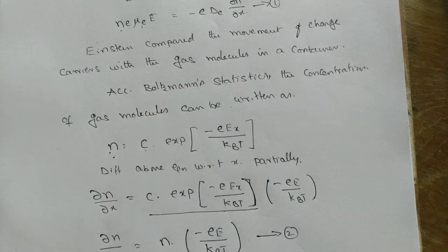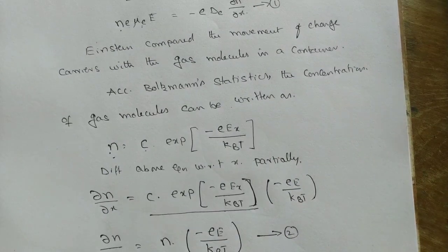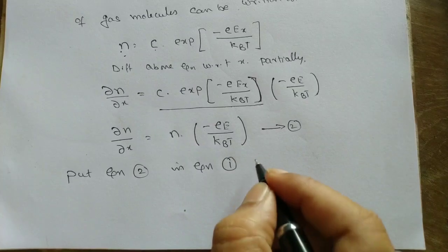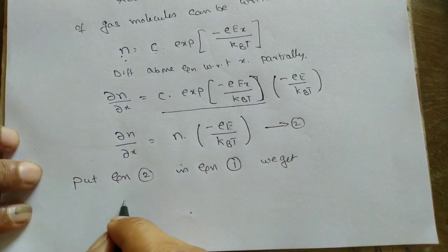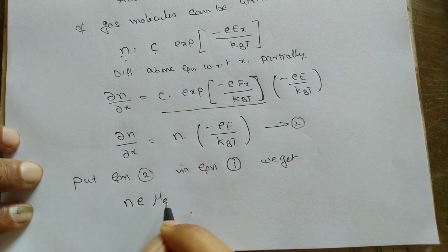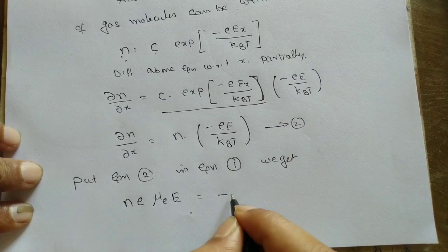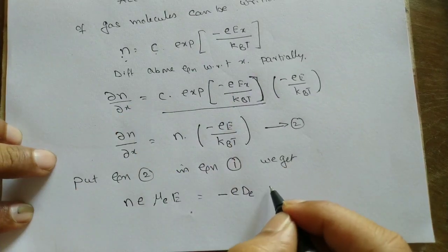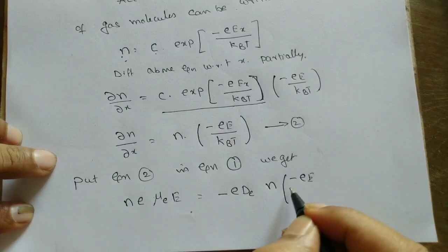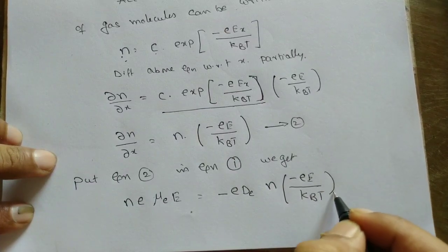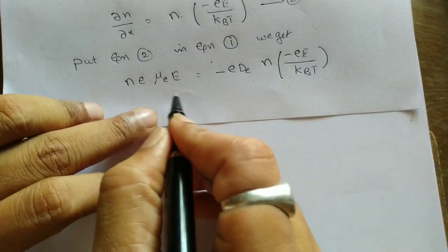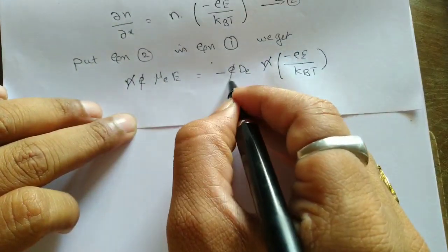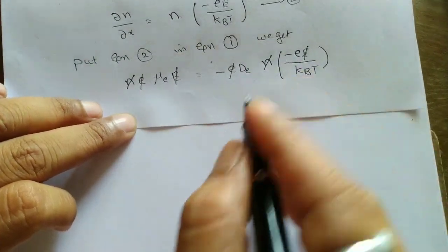Now put equation two into equation one. We get: n·e·mu_e·E = −e·D_e · [n · (−e·E / k_B·T)]. Replacing ∂n/∂x with n·(−e·E / k_B·T) from equation two and substituting into equation one, the terms n, e, and E get cancelled.